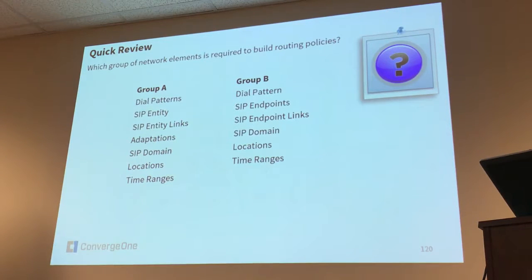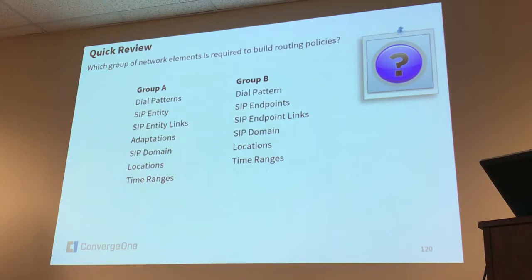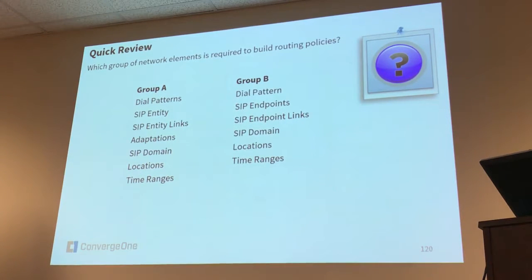Quick review. Let's see if you have a good memory. Which group of network elements is required to build routing policies? Would you go with group A or group B? A. Yeah. I don't like questions where they try to play with words like 'SIP endpoint links' instead of 'SIP entity links.' Especially when you go to a certification exam and they ask you these kinds of questions and they get you.